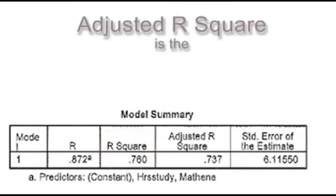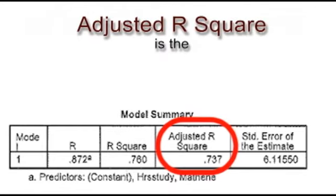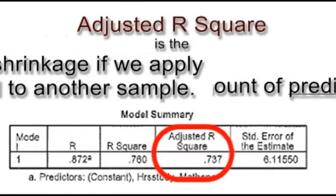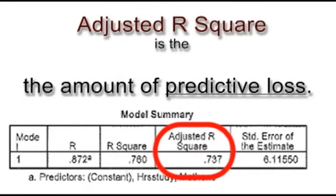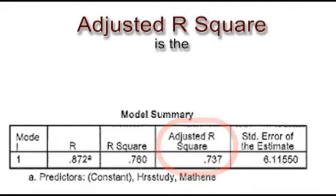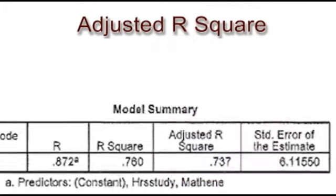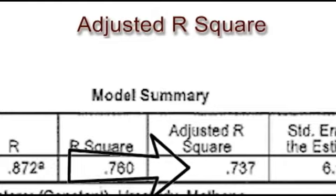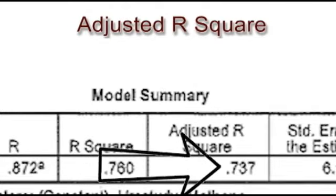The adjusted R square, 0.737, is a measure of the shrinkage we would see if we were to apply this model to a different sample. In other words, the amount of predictive loss that we would observe. That means that if we were to apply this model to a different sample, we would see a slight amount of loss of predictive power from 0.76 down to 0.737.